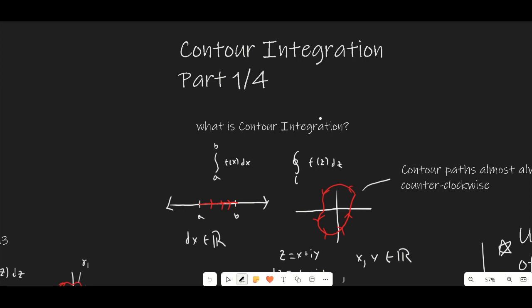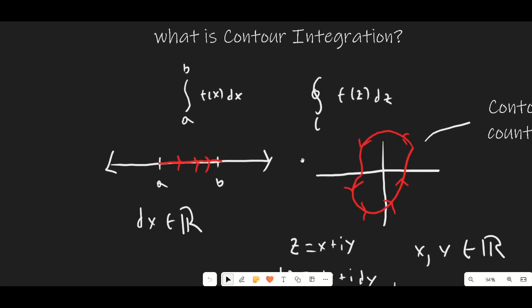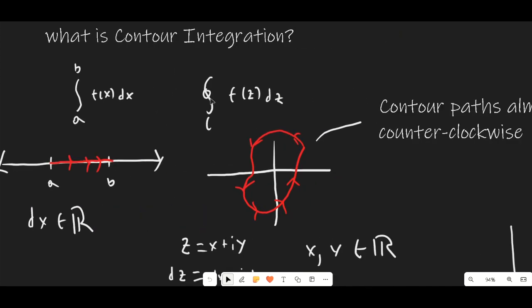The first thing we need to cover is: what exactly is contour integration? It's definitely not the same as normal integration and you'll see why. So I have here the real and complex analogs. Our real integral can be stated as the integral from a to b of f(x) dx. If we drew a number line, we're starting at point a, we move to the right from a to b and we're adding up all the values on this line, multiplying by dx — so dx is obviously a real number in this situation.